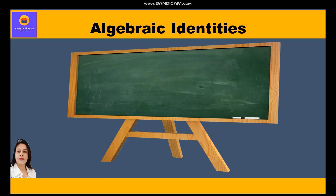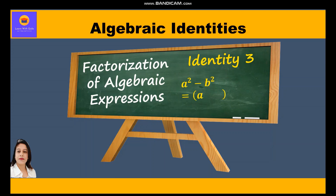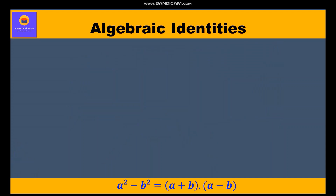Hi everyone! In this video on Algebraic Identities, we shall take up questions related to factorization of algebraic expressions using Identity 3, which is a² - b² = (a + b)(a - b). Here, a² - b² is the product whose factors are (a + b) and (a - b).